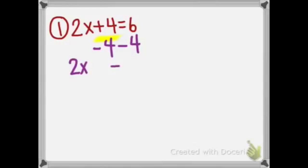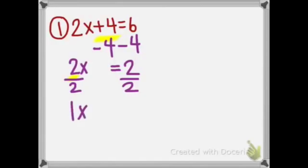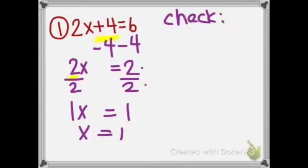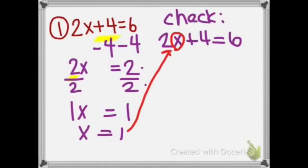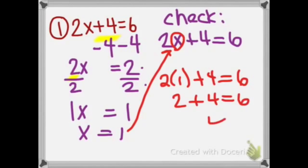That gives us 2x plus 0 equals 2, or just 2x equals 2. The fourth step says multiply or divide the number with the variable. The number with the variable is our 2. Since it says times 2, we're going to divide both sides by 2. 2 divided by 2 is 1x, equals 2 divided by 2, is 1. So x equals 1. To check, substitute back in for x: 2 times 1 plus 4 equals 6, which is 2 plus 4, and that does equal 6. So we got it correct.